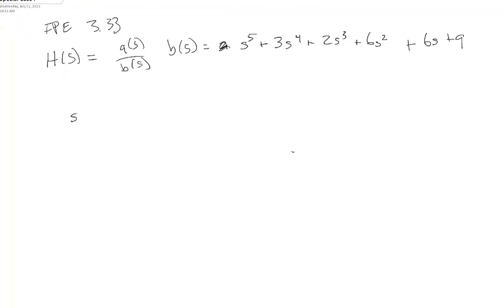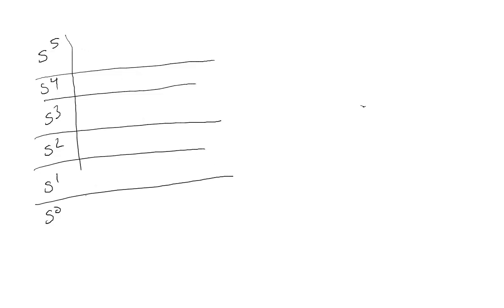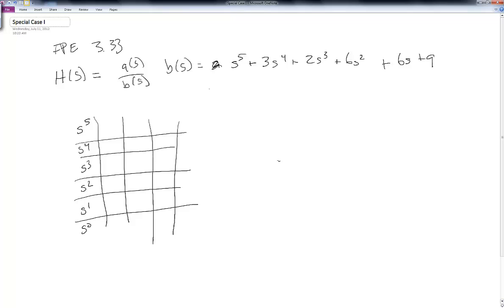So if we go ahead and formulate our Routh Array, S to the 5, S to the 4, S to the 3, S squared, S to the 1, S to the 0, and we draw in our rows and start drawing in our columns.